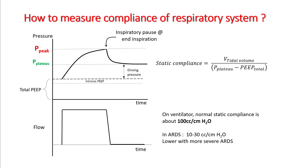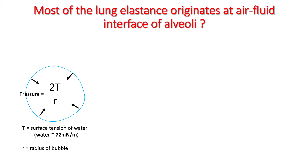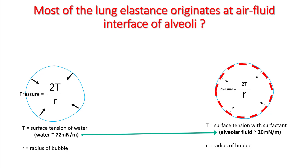Most of the lung elastance arises at the air-fluid interface of the alveoli. The pressure inside a bubble is defined as two times surface tension divided by radius R. Adding surfactant drops the surface tension of water from 72 to 20.